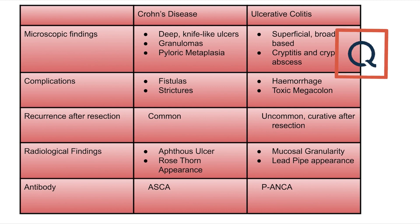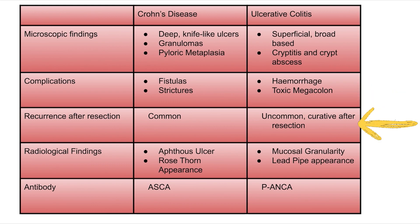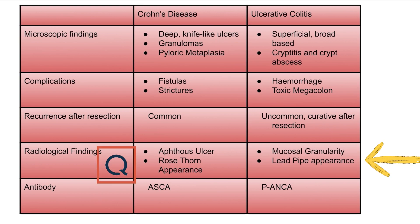Complications: fistulas and strictures are more common in Crohn's disease, while in ulcerative colitis hemorrhage and toxic megacolon are the main complications. Recurrence is more common in Crohn's disease; ulcerative colitis is uncommon after curative resection. Radiological findings: in Crohn's disease — aphthous ulcer and rose-thorn appearance; in ulcerative colitis — lead pipe appearance and mucosal granularity.